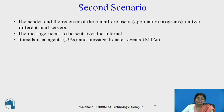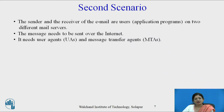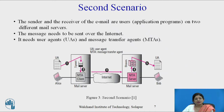The next important scenario is the second scenario of email. In this scenario, the sender and the receiver of the email are users or application programs on two different mail servers, and messages need to be sent over the internet. It requires a user agent and a message transfer agent, abbreviated as MTA.